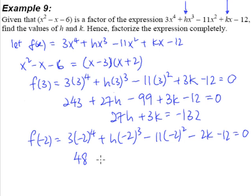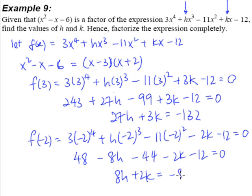we get this as 48, 48 minus 8h, and minus 44 minus 2k minus 12 equals to 0. So simplifying, we will end up with 8h plus 2k is equal to negative 8.